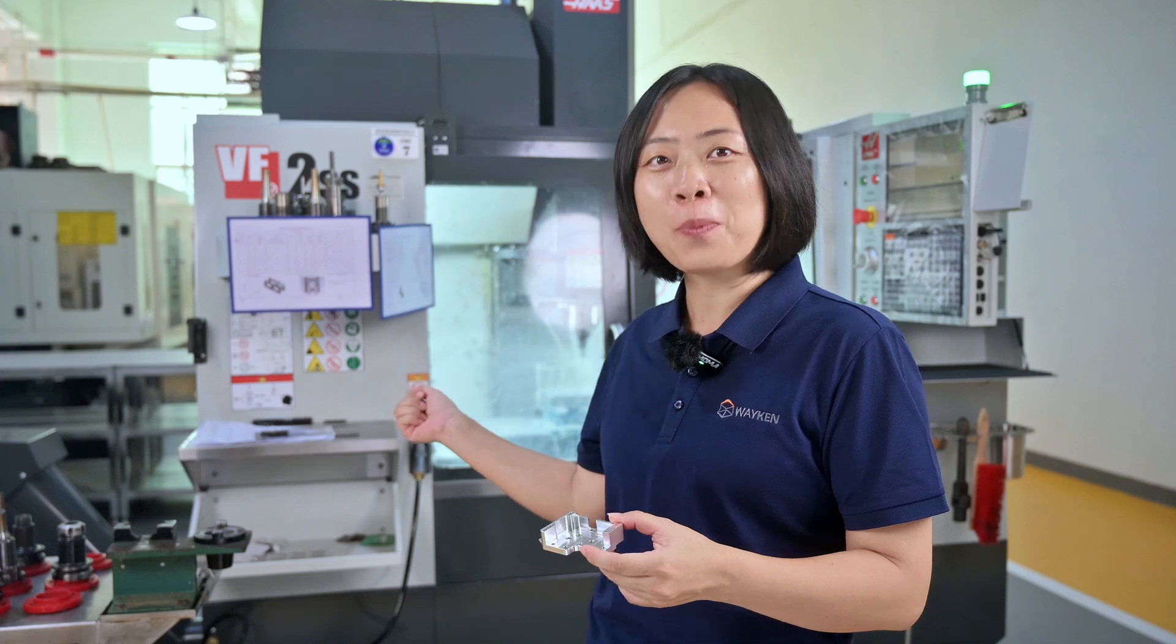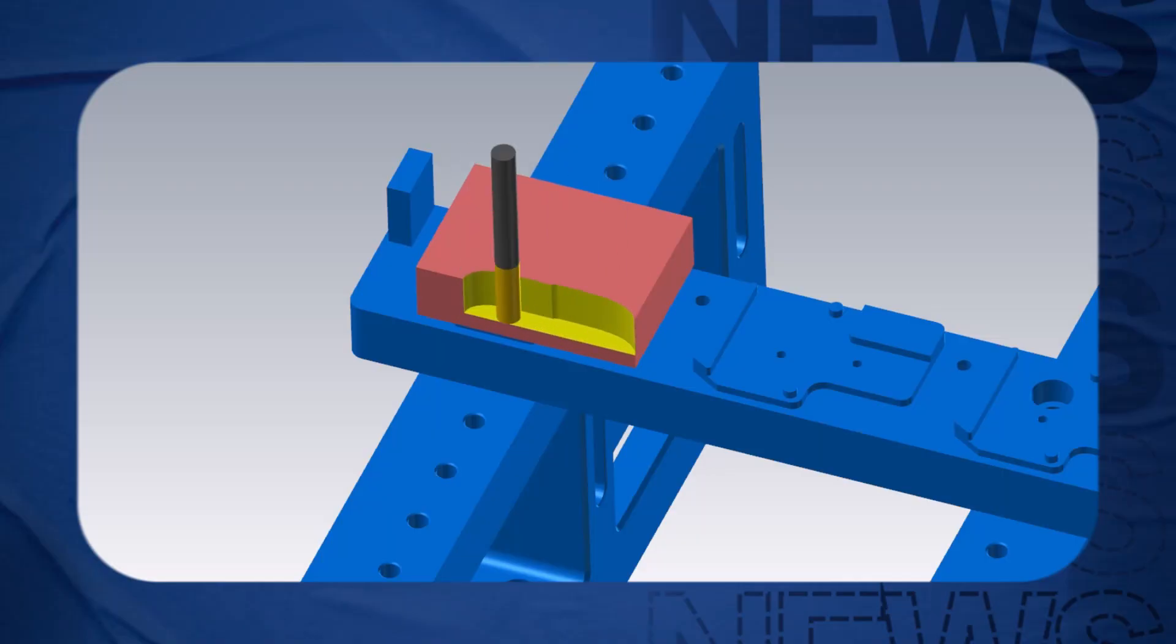Let's see how this machine can help us do the job more efficiently. Because of this part's structure, we need to quickly remove materials from these areas during roughing.